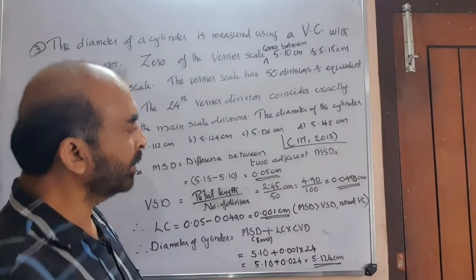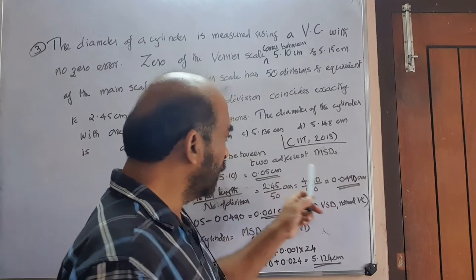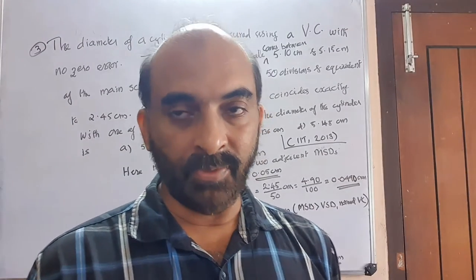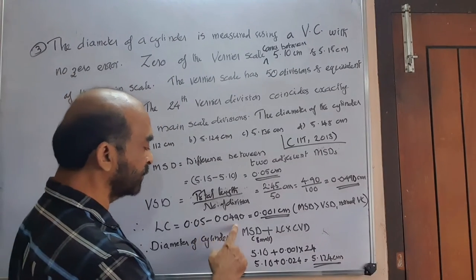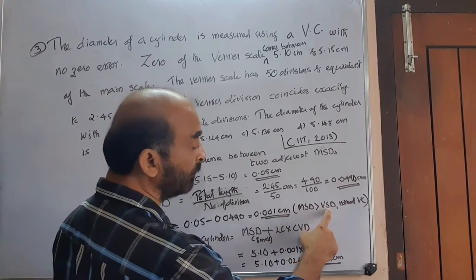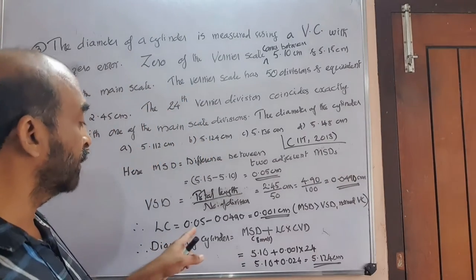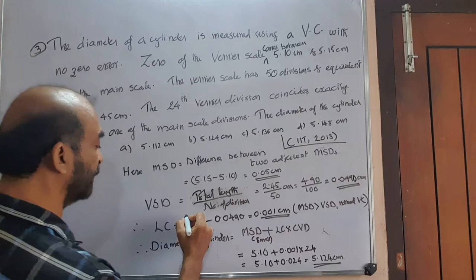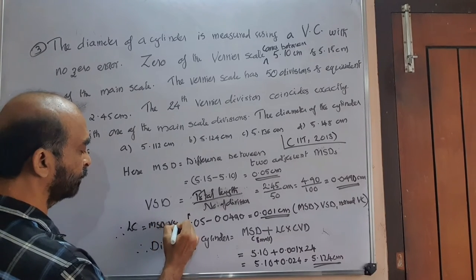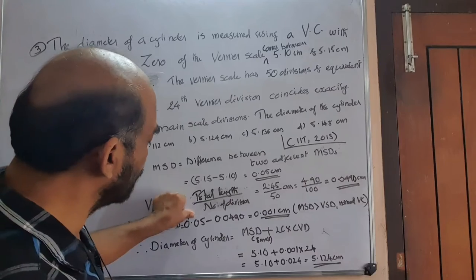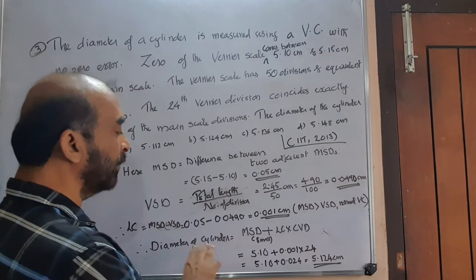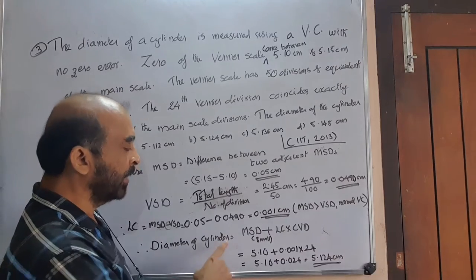Now, least count: we know main scale division value and vernier scale division value. Since main scale division is bigger than vernier scale division, it is a normal vernier scale. Least count equals MSD minus VSD: 0.05 minus 0.049 equals 0.001 centimeter.